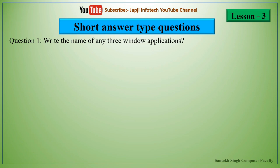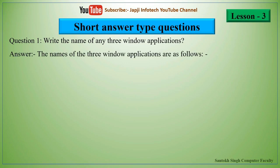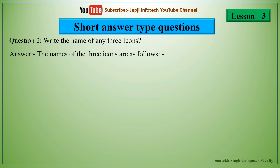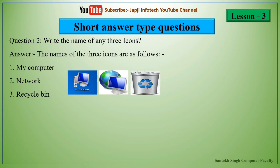We will now read about short answer type questions for lesson 3. The first question: write the name of any three Windows applications — Notepad, WordPad, Paint, and Calculator. The second question: write the name of any three icons — My Computer, Network, Recycle Bin, and User Files.